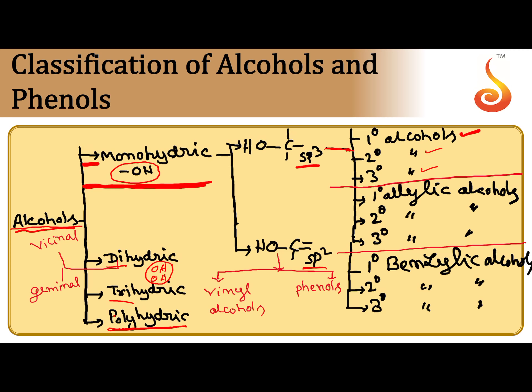If OH is attached to SP2 carbon, they are broadly divided into two types: vinyl alcohols and aryl alcohols. Aryl alcohols are also called phenols. So vinyl alcohols as well as phenols — this is about monohydric alcohols.